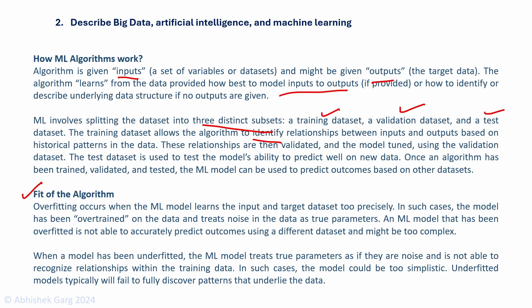Let's discuss the fit of the algorithm. There are two cases: overfitting and underfitting. Overfitting occurs when the machine learning model learns the input and target data set too precisely — it depends on the training data so much that it has high accuracy in training but lower accuracy in the testing phase. In such cases, the model has been over-trained and treats noise as true parameters, making it unable to accurately predict outcomes on a different data set — it could be too complex. When a model is underfitted, it treats true parameters as noise and cannot recognize relationships appropriately; the model could be too simplistic and typically fails to fully discover patterns underlying the data.